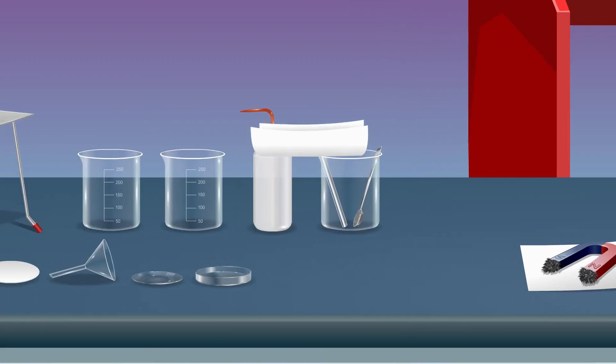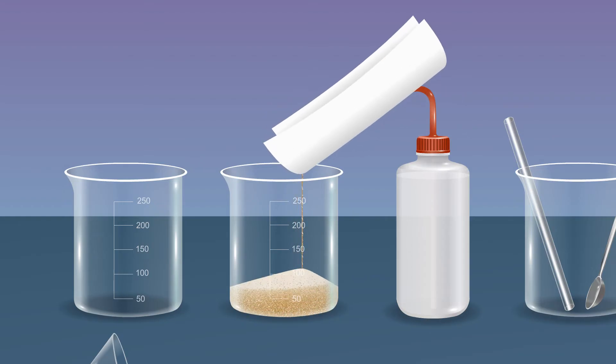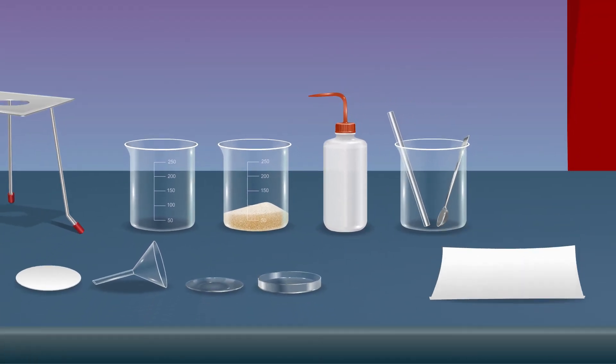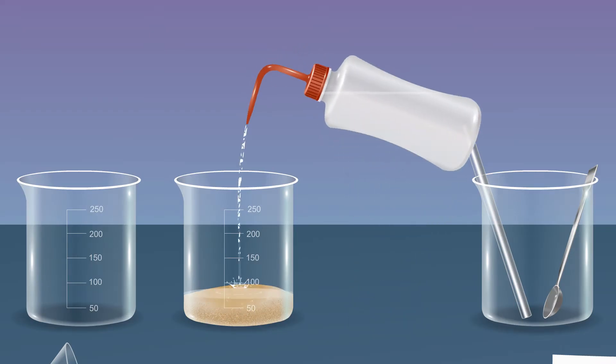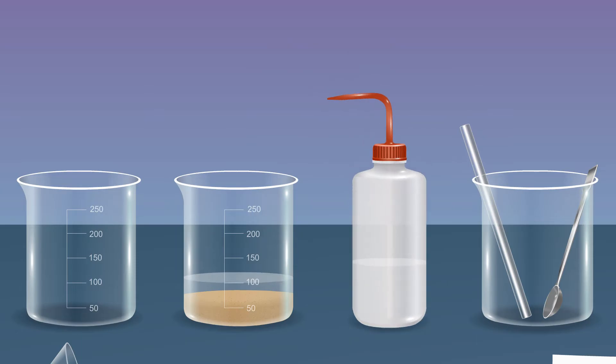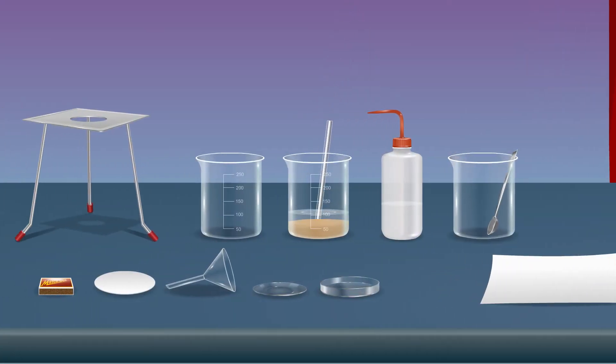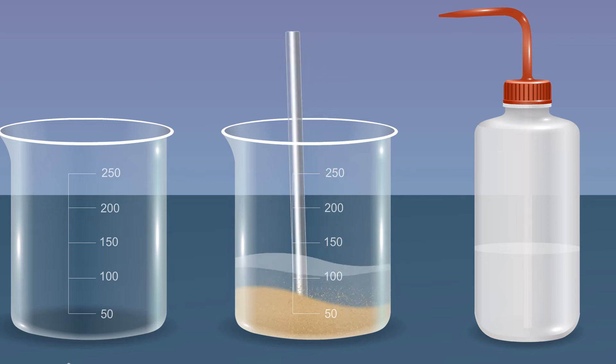Fill a beaker with the residual mixture after the iron filings have been removed. Add a sufficient amount of water using a wash bottle to cover the mixture. Stir the contents of the beaker with a glass rod for some time.